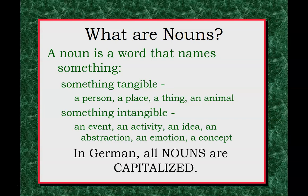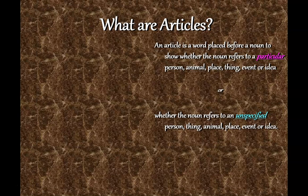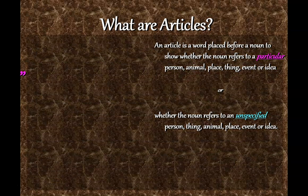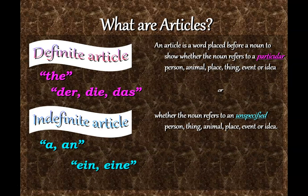In German, all nouns also have articles that are associated with genders. What are articles? An article is a word placed before a noun to show whether the noun refers to a particular person, place, thing, or idea — or something unspecified. Particular nouns take a definite article; unspecified nouns take an indefinite article. The definite article in English is 'the.' The indefinite article in English would be 'a' or 'an.'